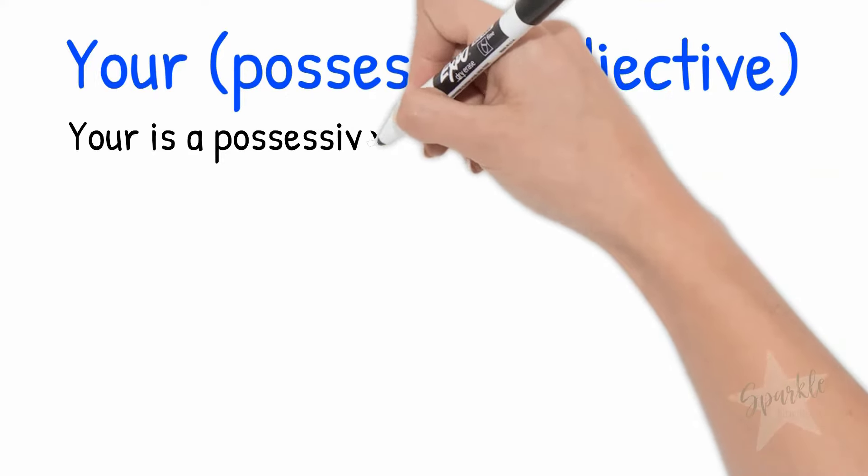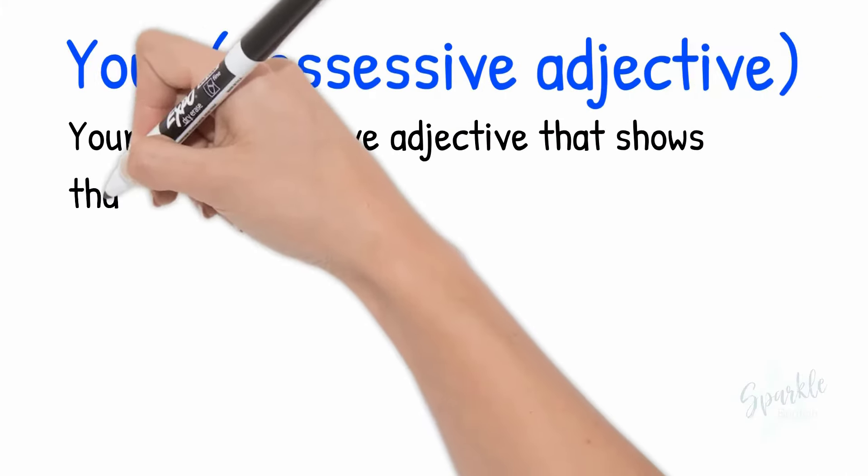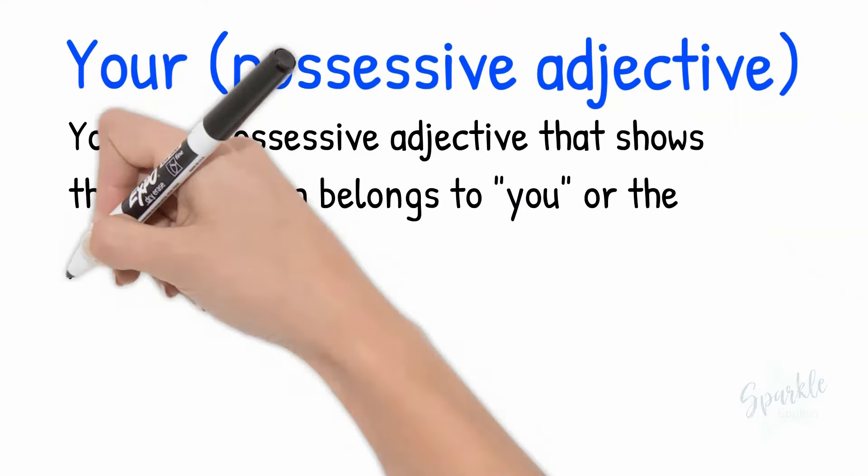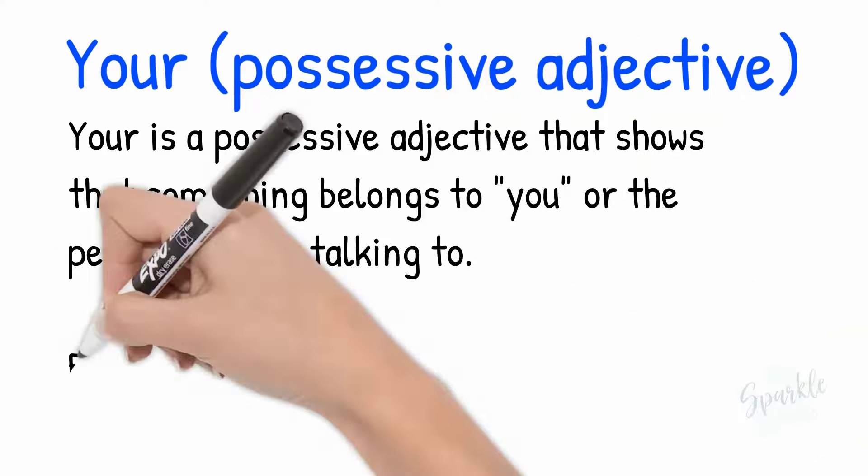Your spelled Y-O-U-R is a possessive adjective that shows that something belongs to you or the person you are talking to.